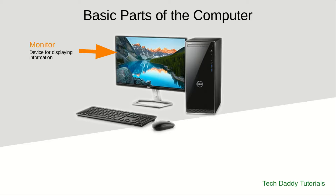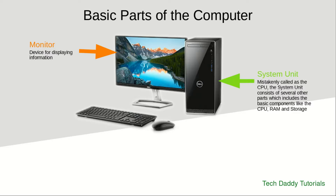Let's start with the discussion of the basic parts of the computer. Let's start with a monitor — this is used for displaying information — followed by the system unit. Now this system unit, most of the time, is mistakenly called the CPU. The system unit consists of several other parts which include basic components like the CPU, RAM, and storage.